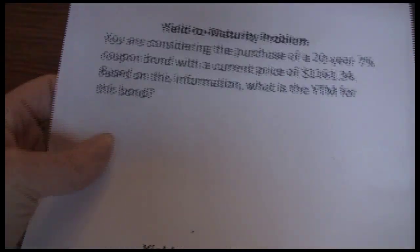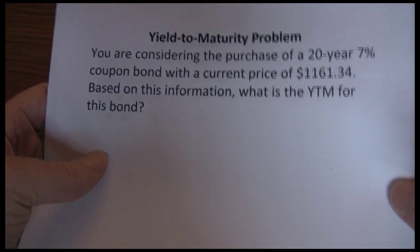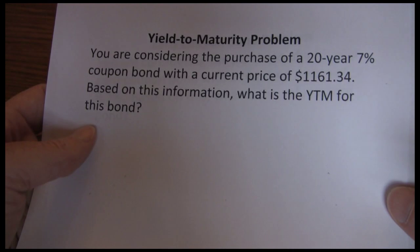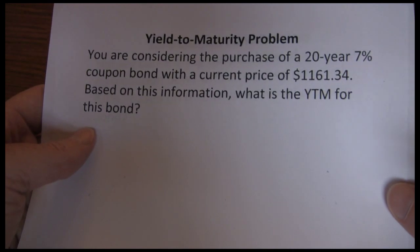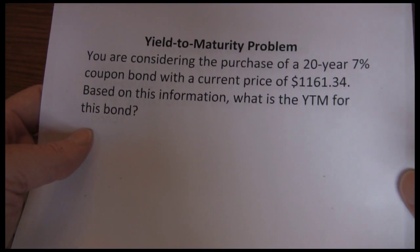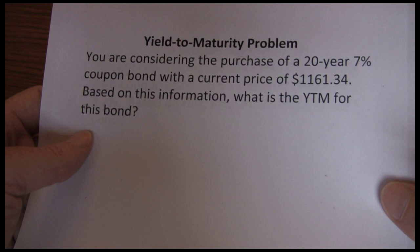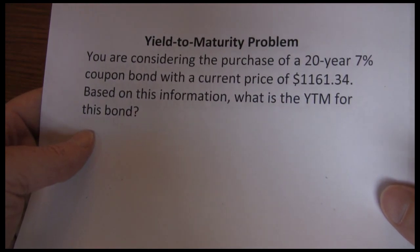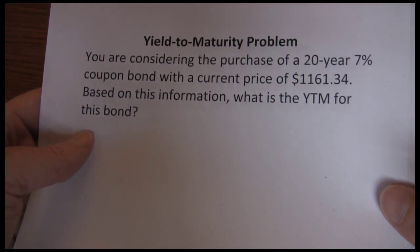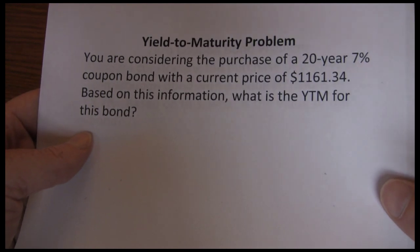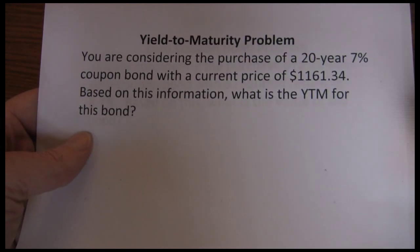In our previous video, we solved for the price of a bond — what it was worth to us today. Another way to look at bond pricing is what rate of return can we expect to earn, and that's referred to as the yield to maturity. When we want to calculate the yield to maturity, we're calculating our expected rate of return if we buy the bond today and hold it until maturity.